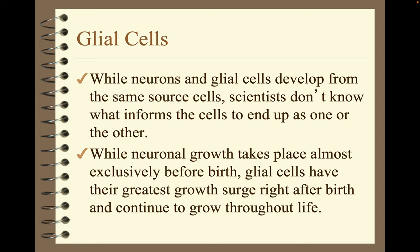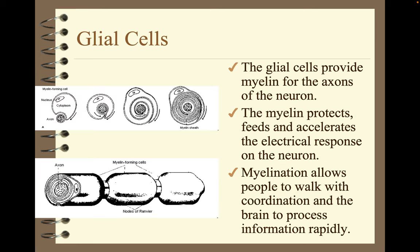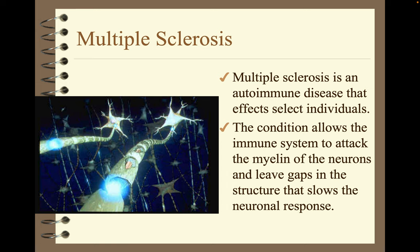While neurons and glial cells develop from the same source cells, scientists don't know what informs the cells to end up as one or the other. While neuronal growth takes place almost exclusively before birth, glial cells have their greatest growth surge right after birth and continue to grow throughout life. The glial cells provide myelin for the axons of the neuron. Myelin protects, feeds, and accelerates the electrical response on the neuron — myelination allows people to walk with coordination and the brain to process information rapidly. Multiple sclerosis is an autoimmune disease that allows the immune system to attack the myelin of neurons and leave gaps in the structure that slow the neuronal response.